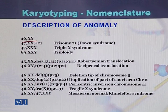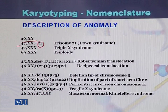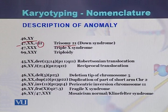In the case of 47,XX+21, it means there is an addition of chromosome 21. When there is an extra copy of chromosome 21, it is called trisomy of chromosome 21. Trisomy of chromosome 21 typically produces Down syndrome in the children.